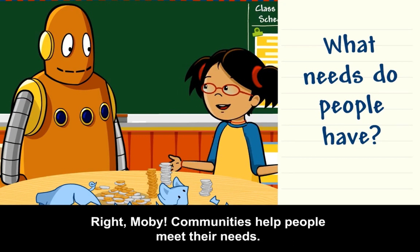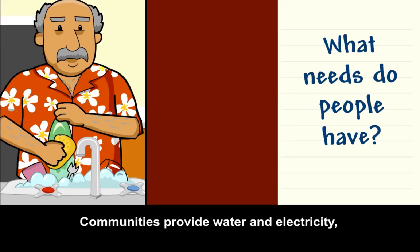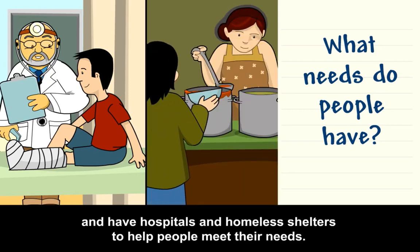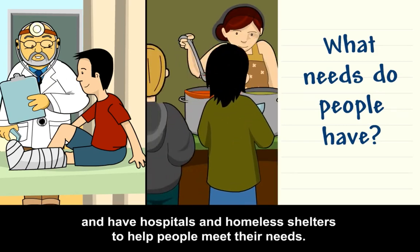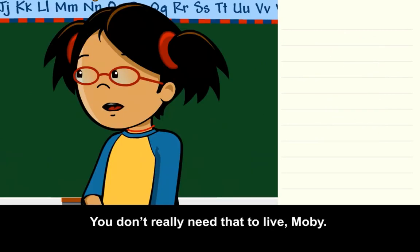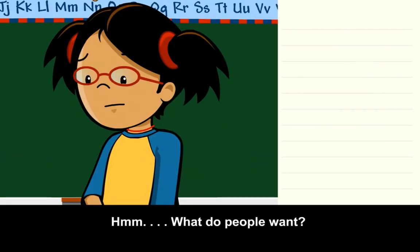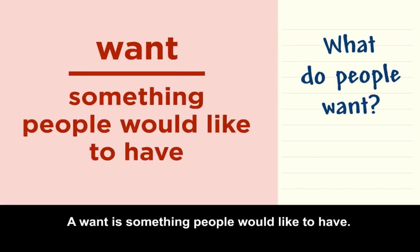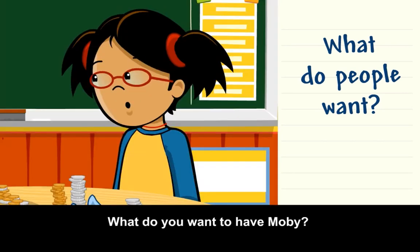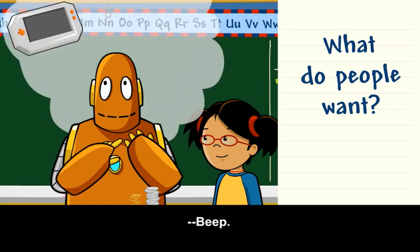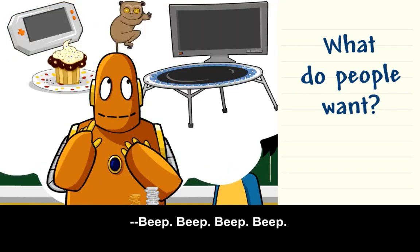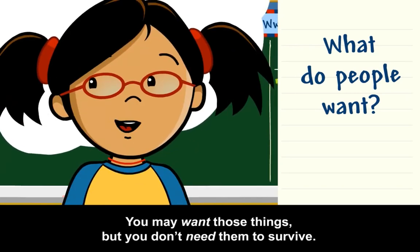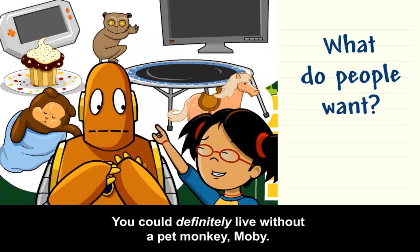Communities help people meet their needs. Communities provide water and electricity, and have hospitals and homeless shelters to help people meet their needs. You don't really need that to live, Moby. What do people want? A want is something people would like to have. You may want those things, but you don't need them to survive. You could definitely live without a pet monkey, Moby.